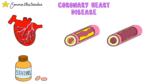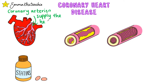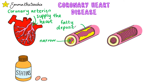The heart pumps blood to all of our body's cells. It works very hard and requires lots of oxygen and glucose for its own cells. These are supplied by the coronary arteries, and you can see them here covering the heart. Sometimes the coronary arteries can become narrow, usually caused by a build-up of fatty deposits. This is called coronary heart disease, or CHD.